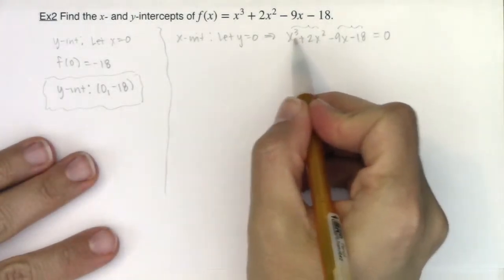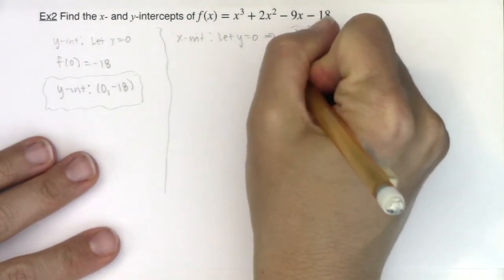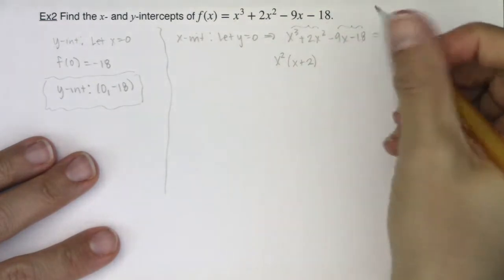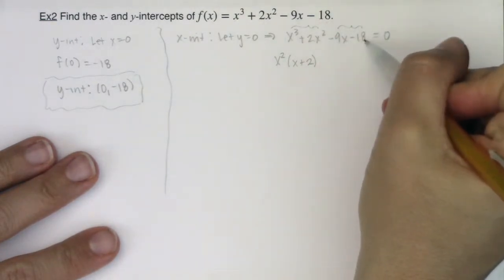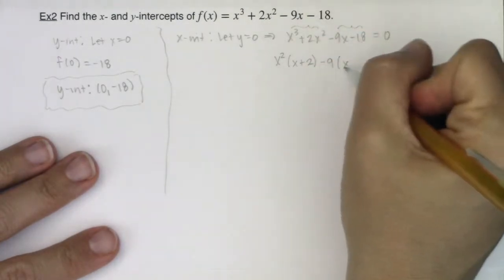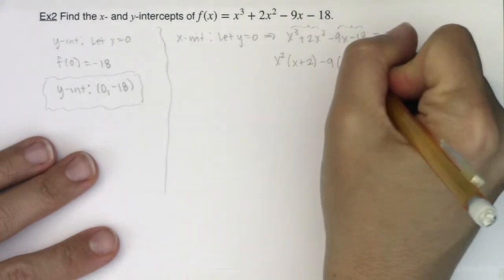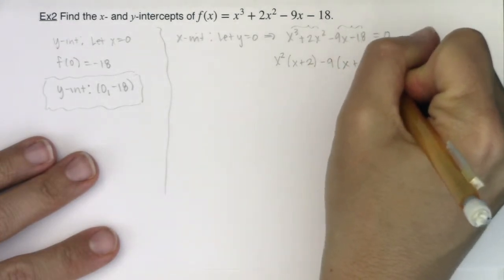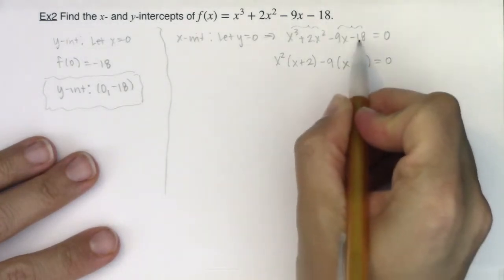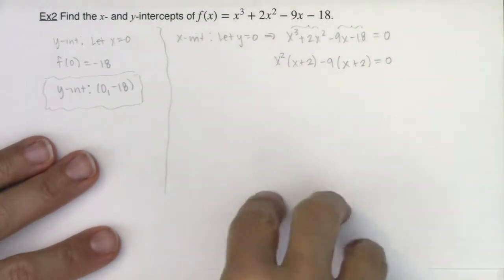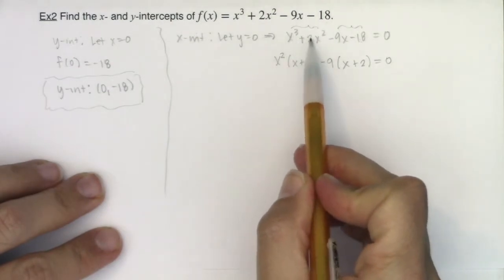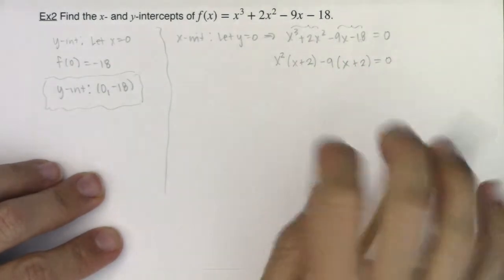So what's the GCF between these first two? Well I can take out an x² and I'll be left with (x + 2). What's the GCF on these last two? Well you can opt to take out a 9 or a negative 9. I'm going to take out the negative 9 because I want that positive coefficient here and when I factor out the negative 9 I'm going to be left with (x + 2). I just like to check that -9 times positive 2 really is -18. I always like to check my pluses and minus signs just to make sure I'm on the right track.